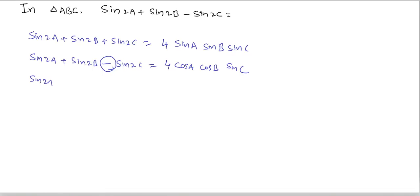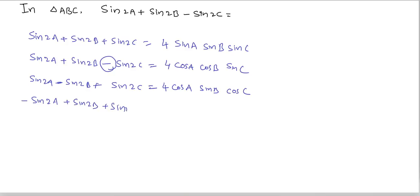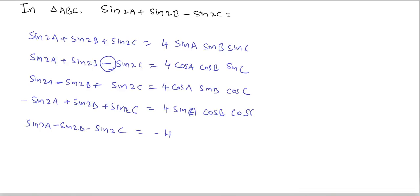And sin2A - sin2B + sin2C = 4cosA sinB cosC. Also, -sin2A + sin2B + sin2C — here angle A is minus — equals 4sinA cosB cosC. And if two terms are minus: sin2A - sin2B - sin2C = -4sinA cosB cosC.